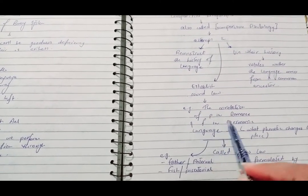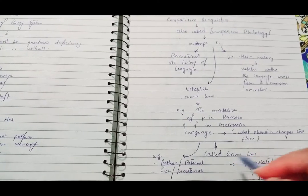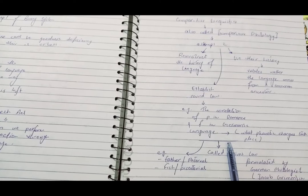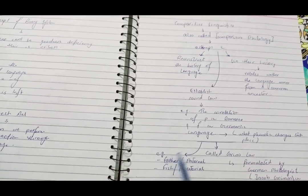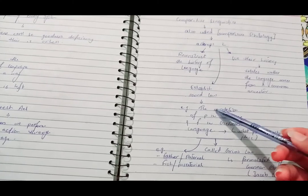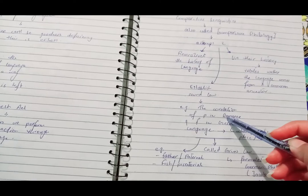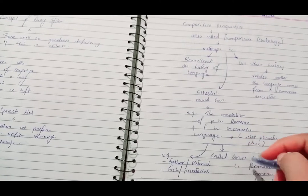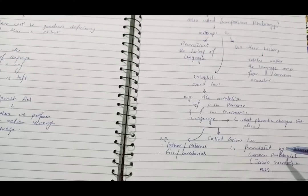It attempts to establish the sound law, the correlation of the first sound in the Romance and first sound in Germanic language, which is also referred as Grimm's law. This relationship of sounds in Romance and Germanic language is referred as Grimm's law. For example: father, paternal. In Romance it is paternal and in German it is father.